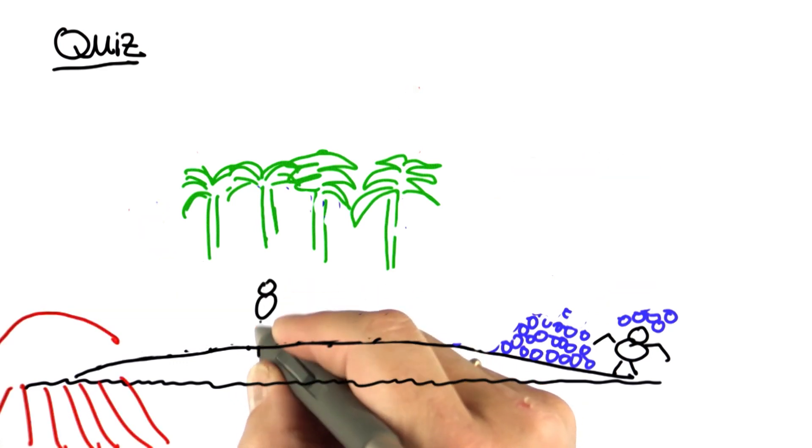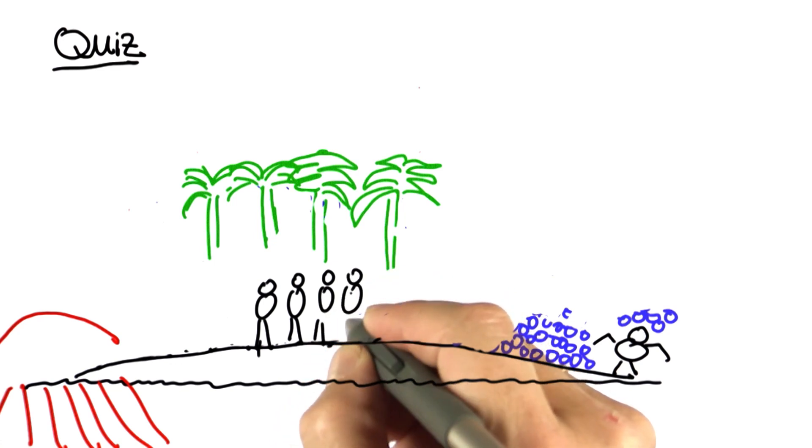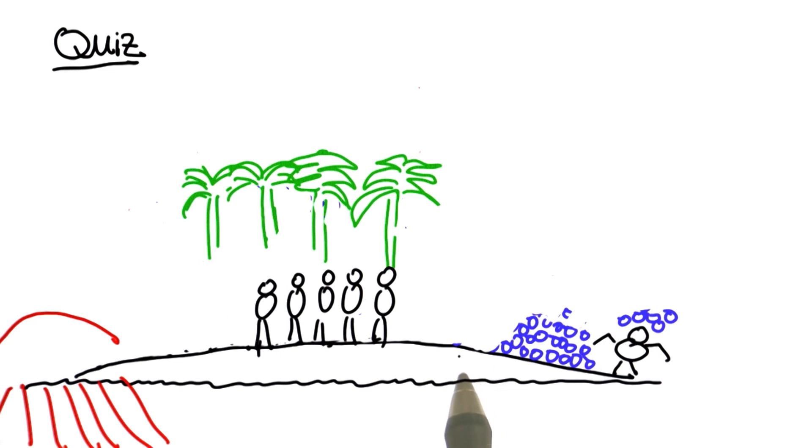As the sun rises all five guys wake up at the same time. And they all realize the mountain of coconuts has shrunk substantially. But they can't say anything because each of them took some away in the middle of the night. So they decide to proceed as planned.